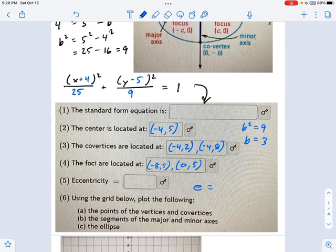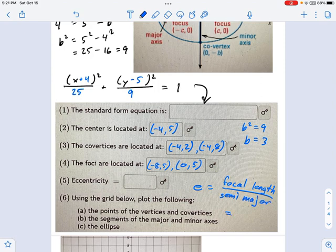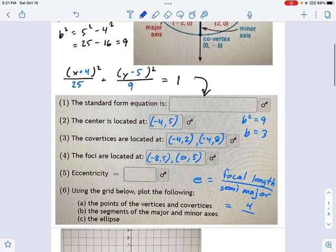Well, remember what eccentricity is. This is defined as the focal length, for lack of a better word. I know that kind of big foots on some of our vocab from parabolas, but the distance from the center to the focus. And that's divided by the semi-major axis. So in our case, the focal length was 4, and the semi-major axis was 5. So for us, that would just be 4 fifths.